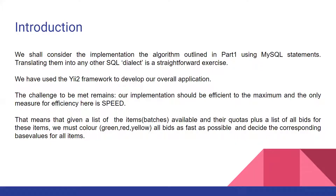We have also used the G2 framework to develop our overall application. The challenge to be met remains: our implementation should be efficient to the maximum, and the only measure for efficiency here is speed. That means that given a list of items or batches available with their quotas, plus a list of all bids for these items, we must process all bids as fast as possible and decide the corresponding base values for all items.